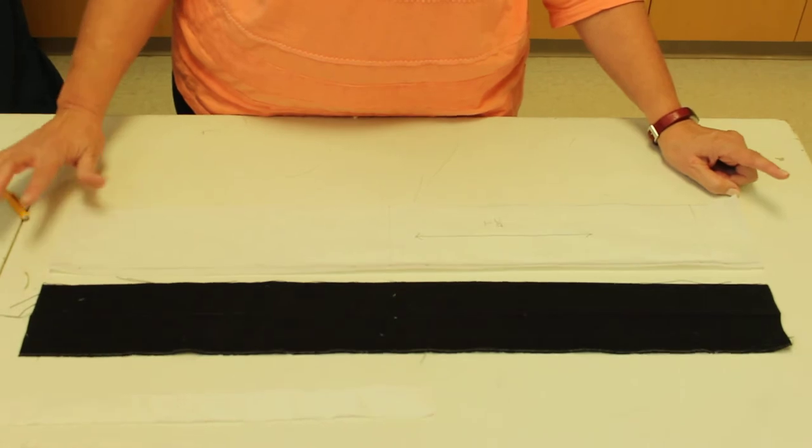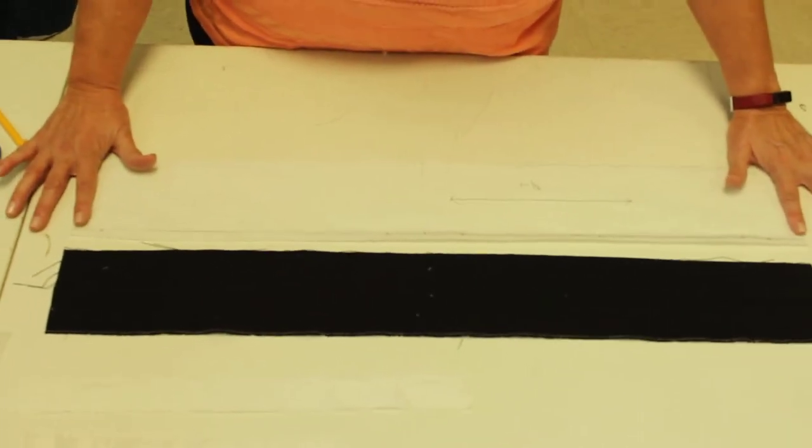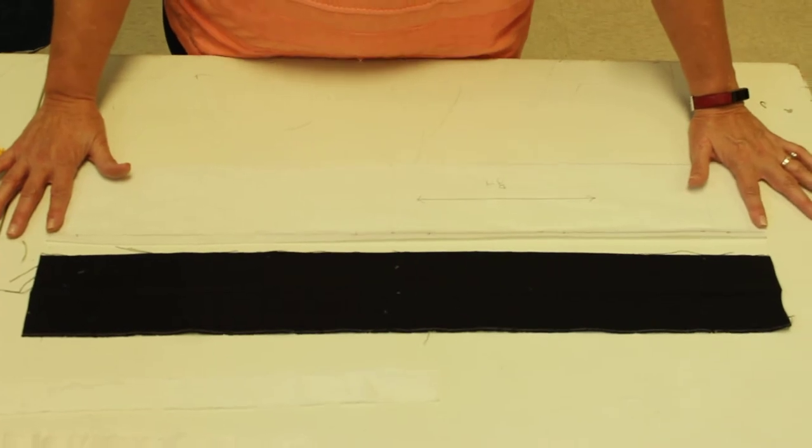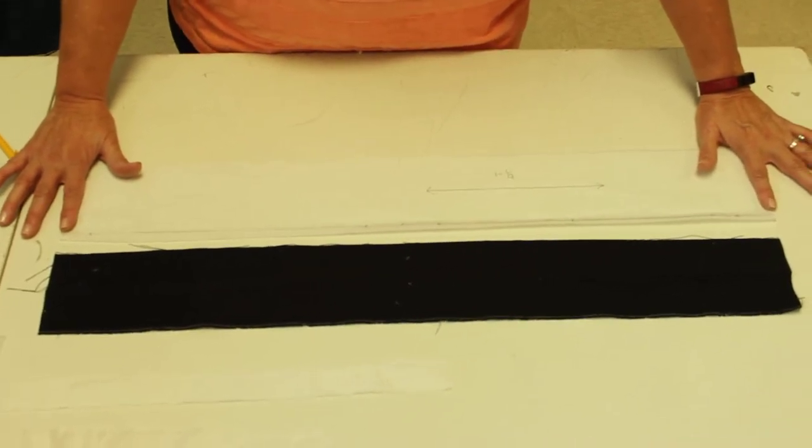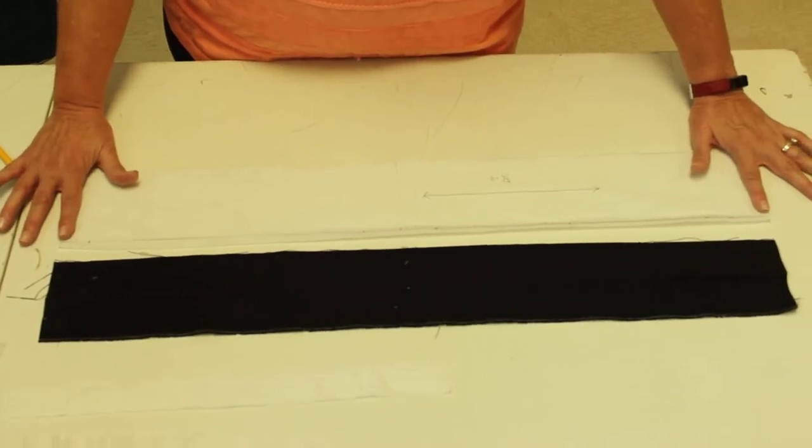However, you're also going to have a seam here and a seam here. So you also need to add an inch and a quarter to that length plus your waist measurement plus ease, plus an inch and a quarter for the two seam allowances.